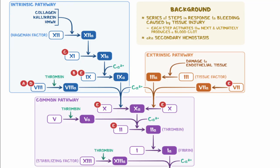The coagulation cascade consists of three pathways — the intrinsic, extrinsic, and common pathways — that interact together to form a stable blood clot. The cascade involves the activation of a series of clotting factors, proteins involved in blood clotting. Each clotting factor is a serine protease and is initially in an inactive form called a zymogen. In the presence of glycoprotein cofactors, the clotting factor is activated and then able to catalyse the next reaction.